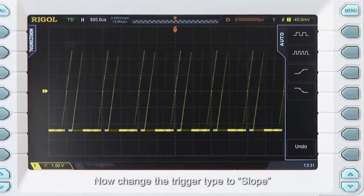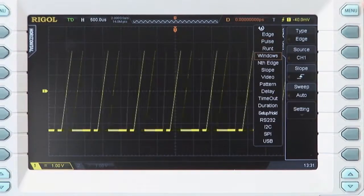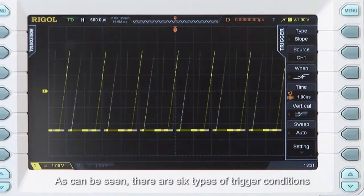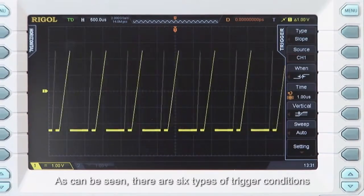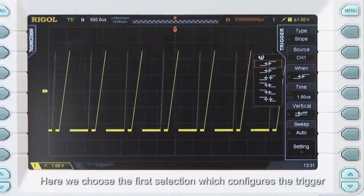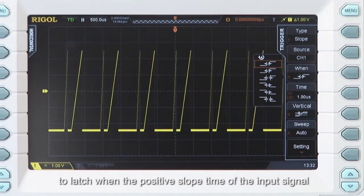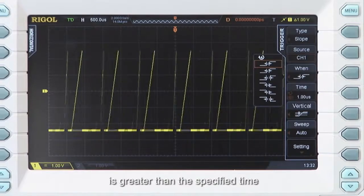Now change the trigger type to slope and select source as channel 1. As you can see, there are now 6 types of trigger conditions available. Here we choose the first selection which configures the trigger to latch when the positive slope time of the input signal is greater than the specified time.